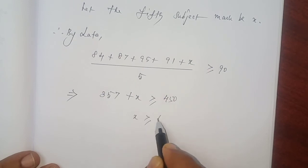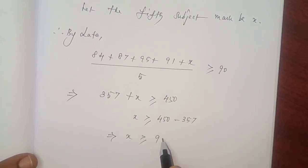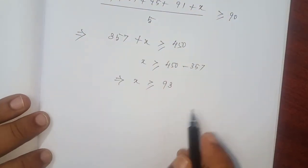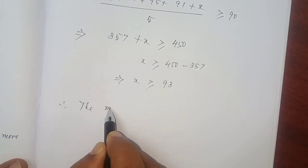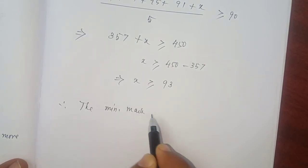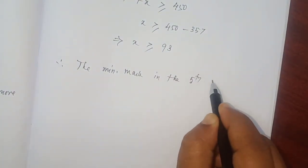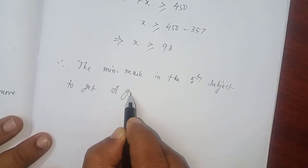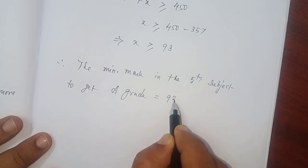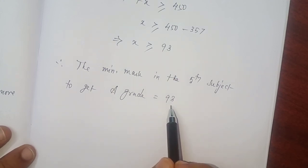So, X greater than or equal to 450 minus 357, which implies X greater than or equal to 93. Therefore, the minimum mark in the 5th subject to get a grade is equal to 93. So, greater than or equal to 93 means minimum of 93 for getting the A grade.